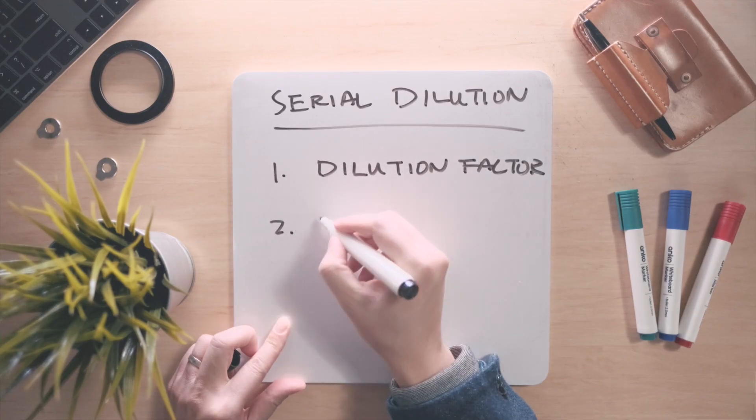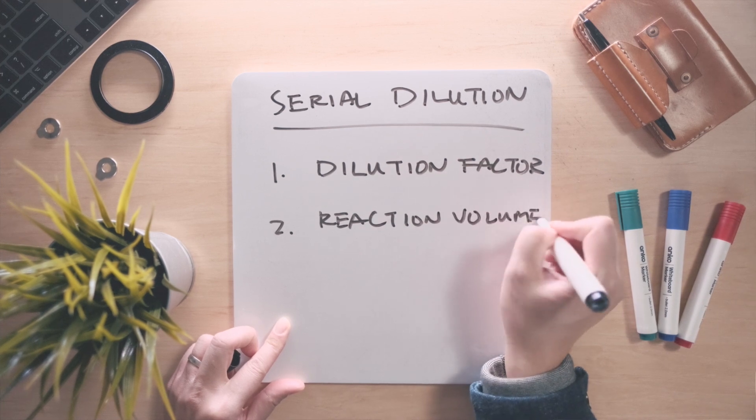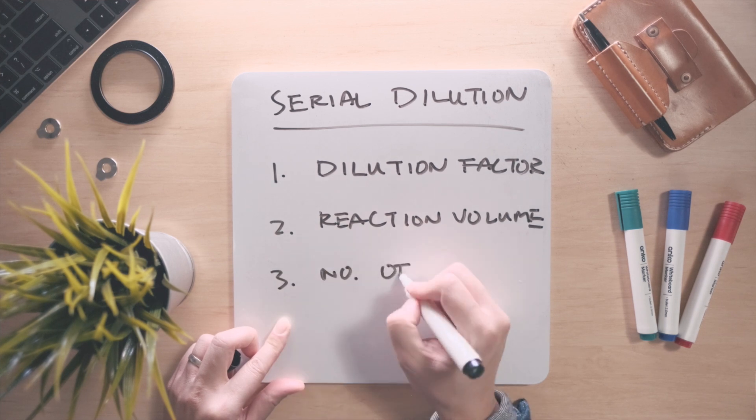Next is reaction volume, which is the total volume of sample and diluent when they are being mixed. This volume is the same for every dilution in the series as well.